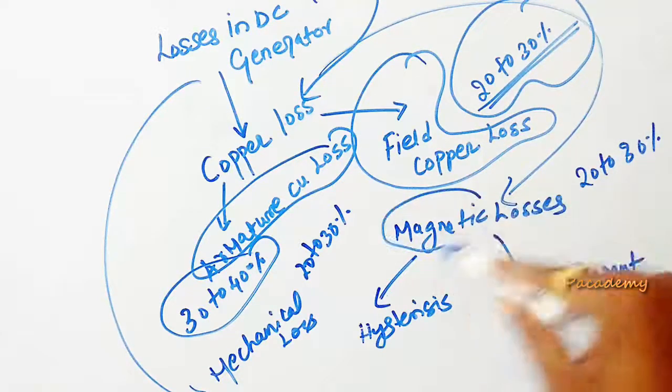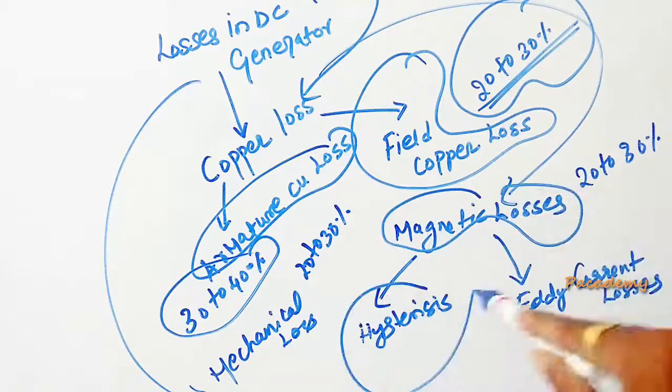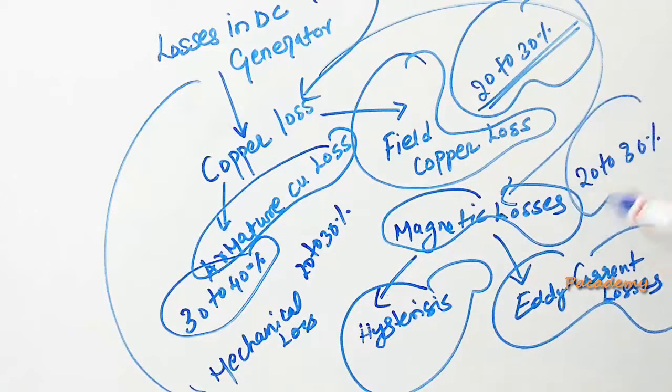The other kind of loss is the magnetic losses. These happen due to hysteresis and eddy current effects. These losses account to around 20 to 30% of the full load losses in the generator.